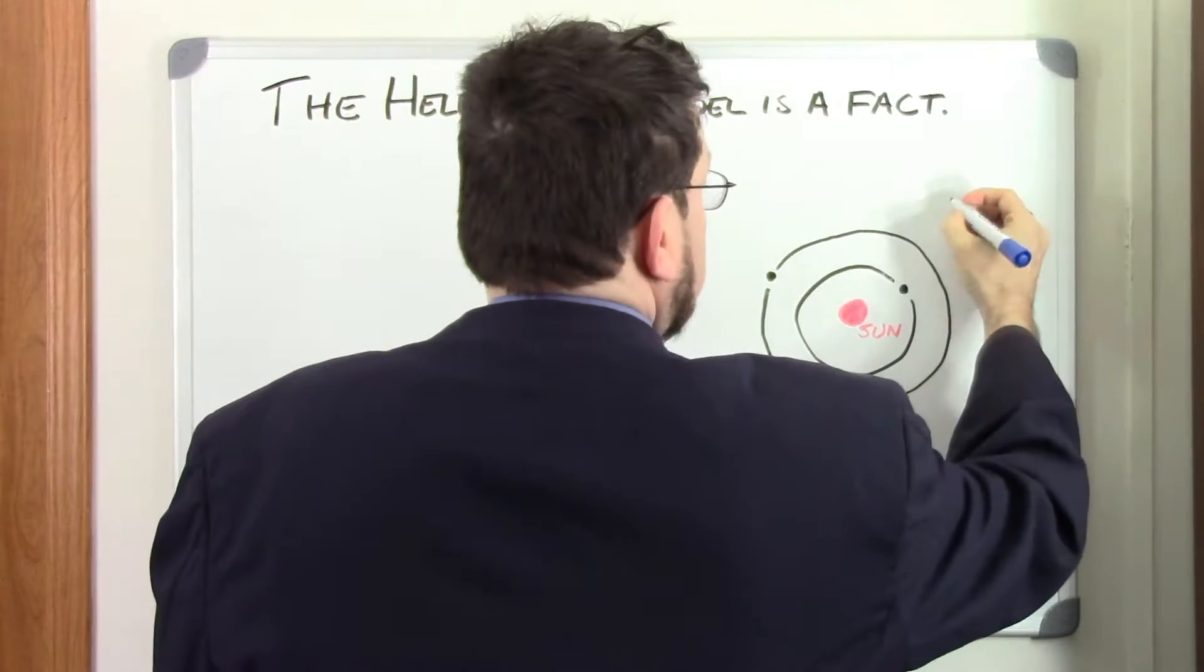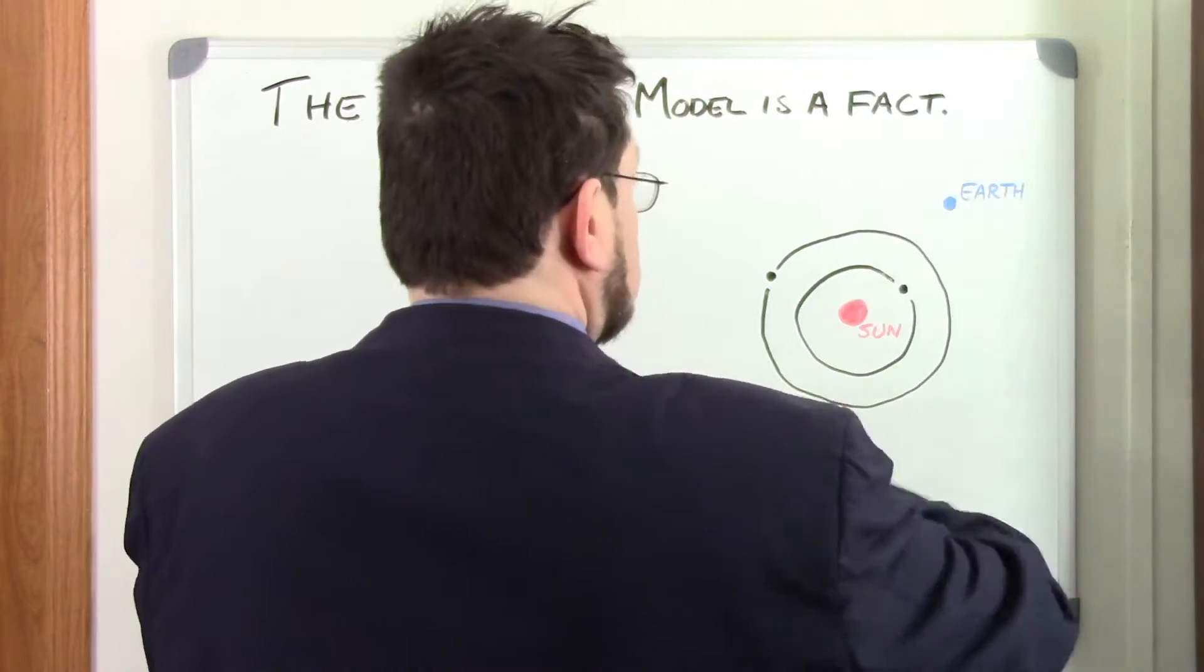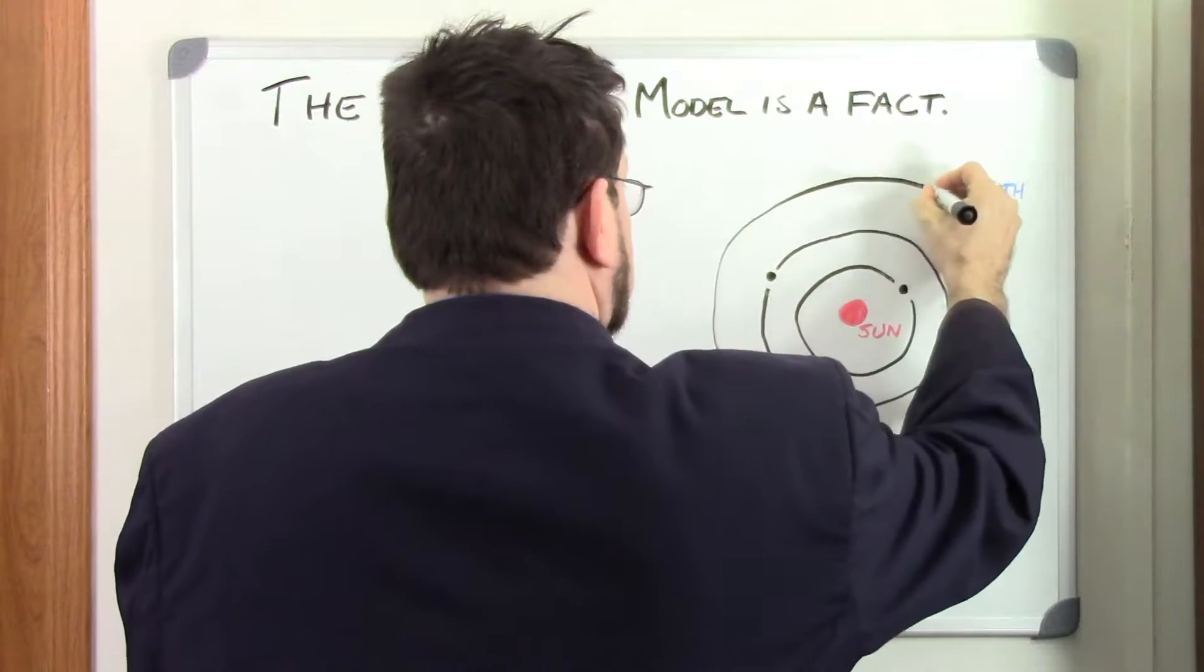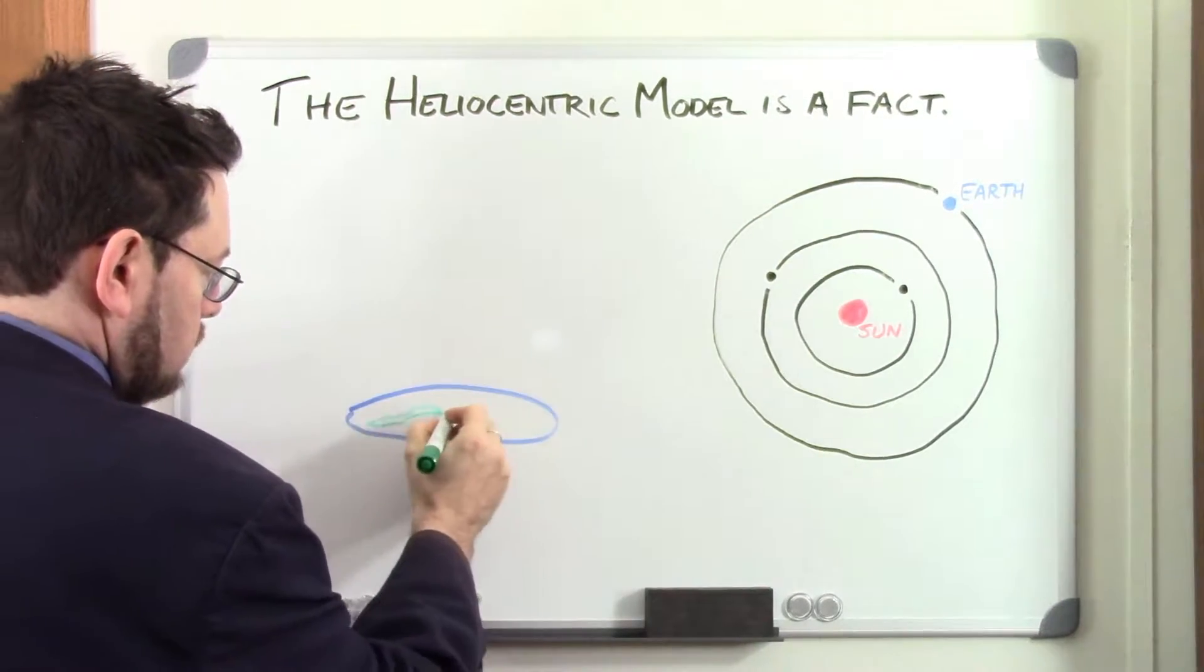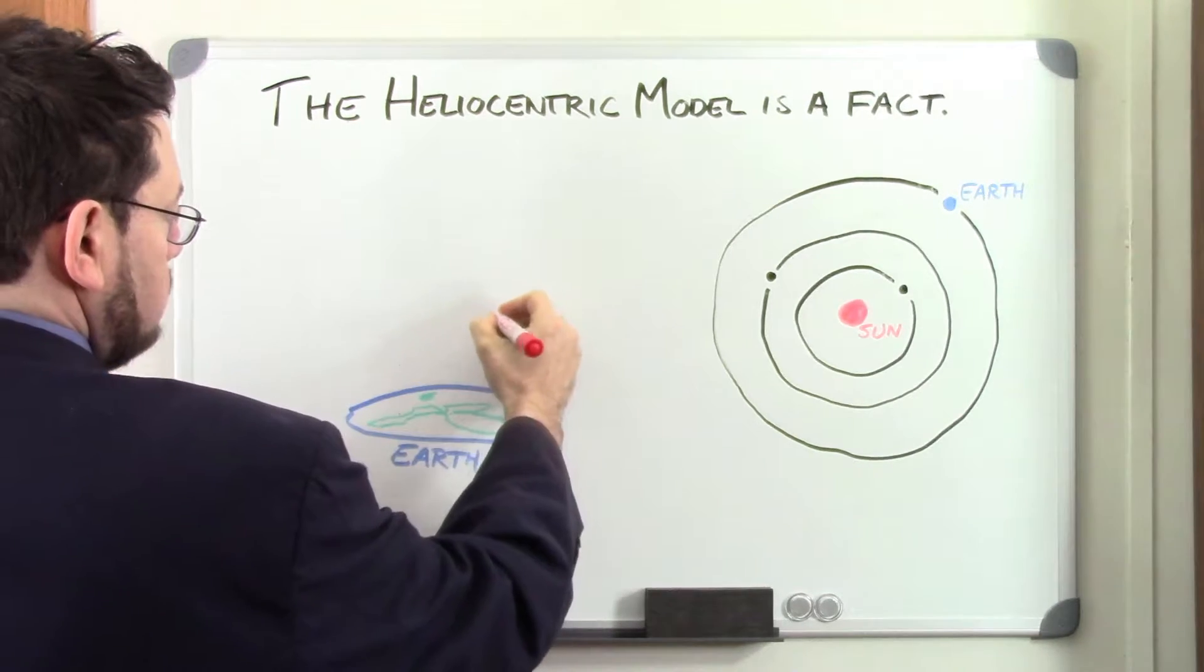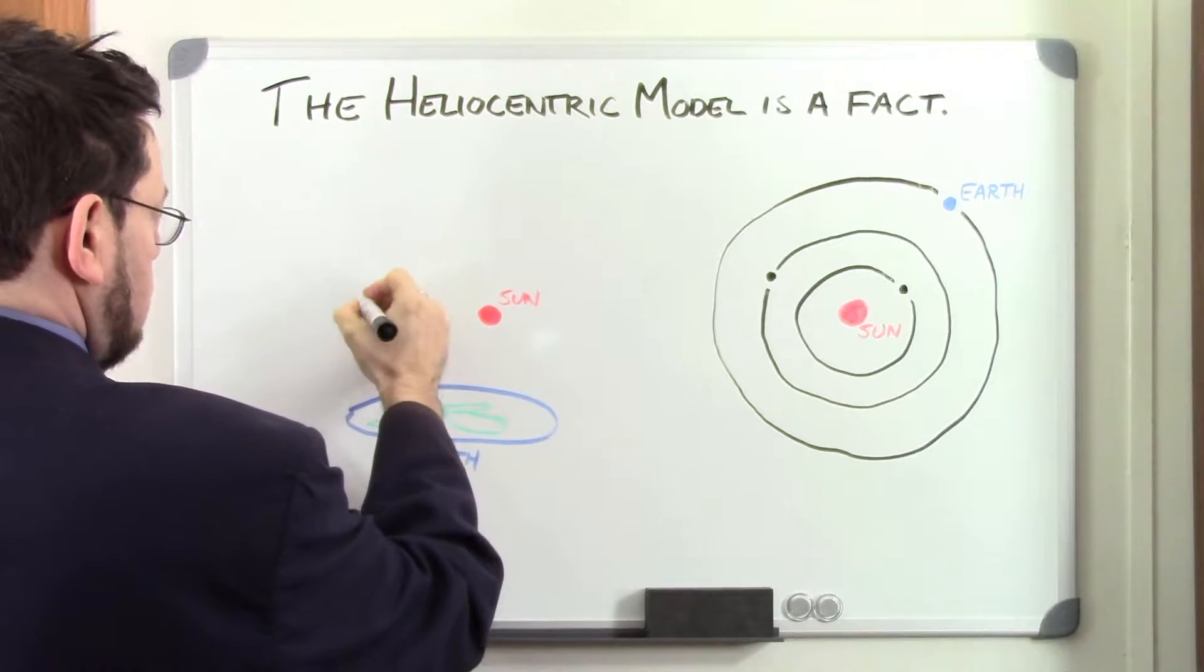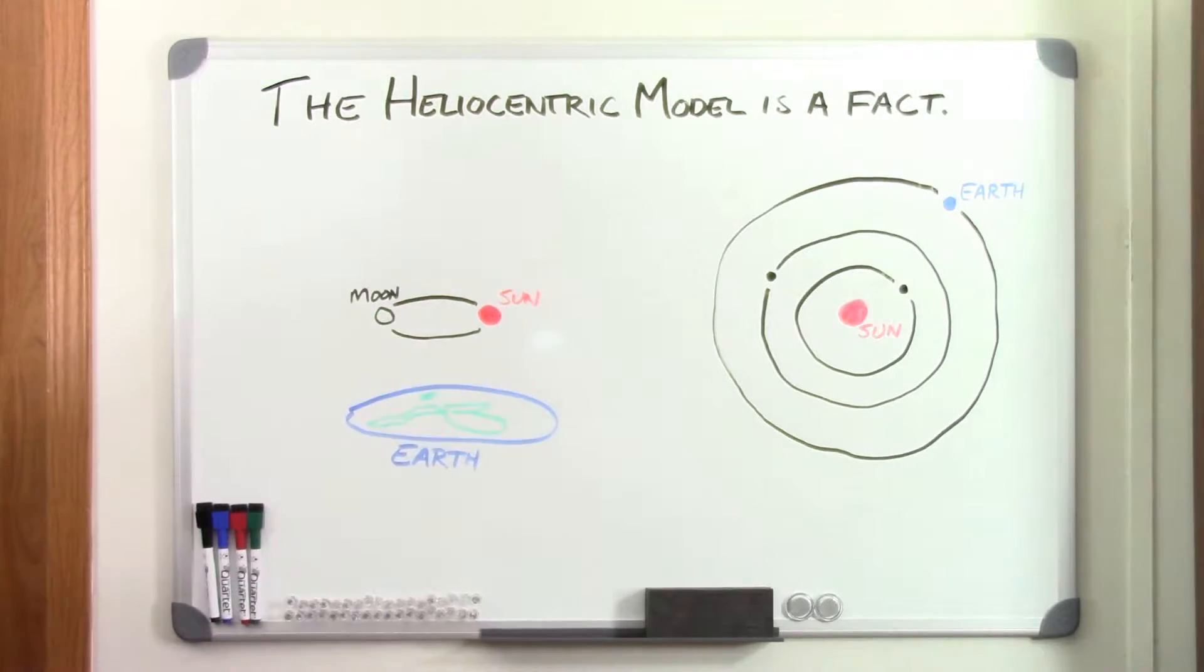And yet there are those who deny it, saying that instead of the earth and the other planets orbiting the sun, that the earth is the center of the universe, and that everything revolves around it. These same people say that the earth is not a globe, but a flat disk. This is not just incorrect, it is perverse.